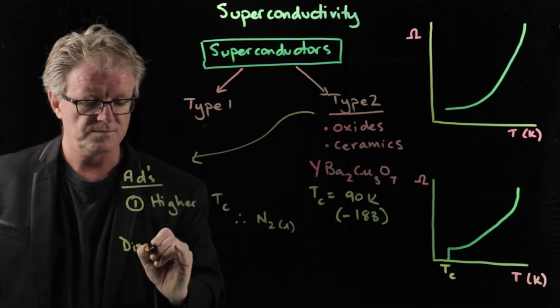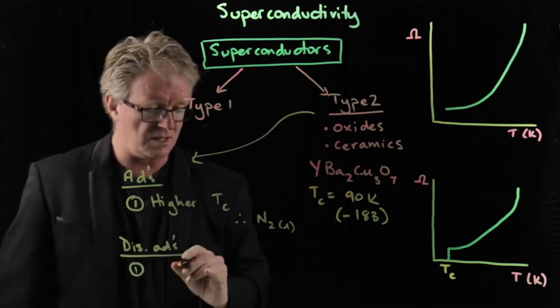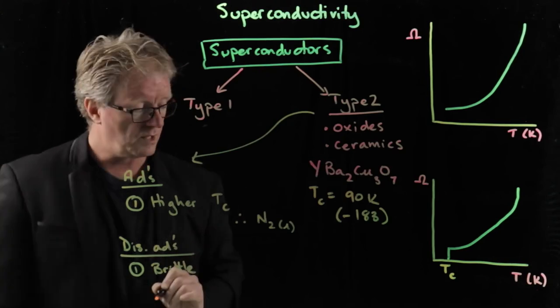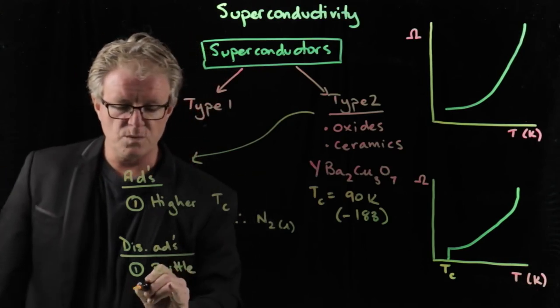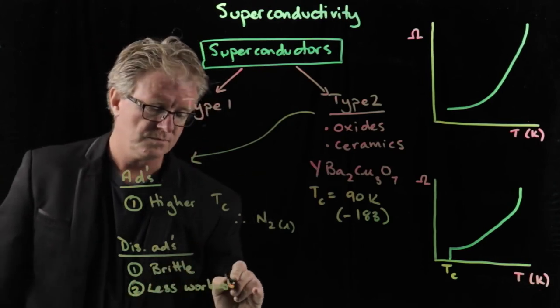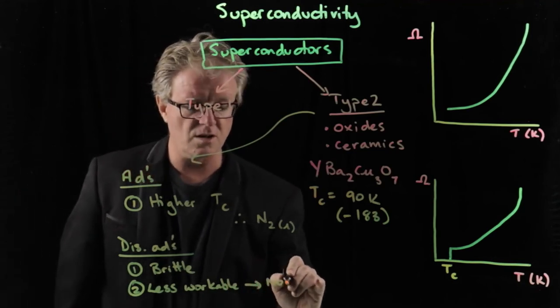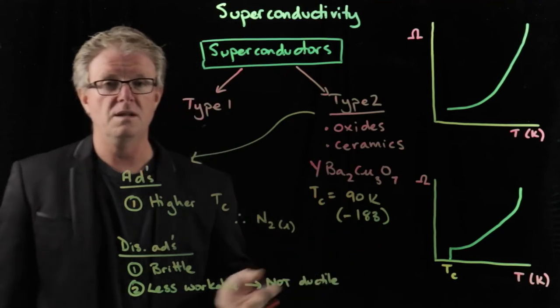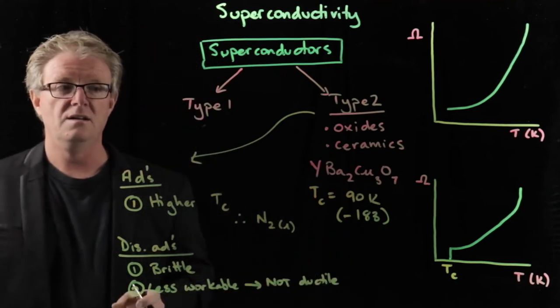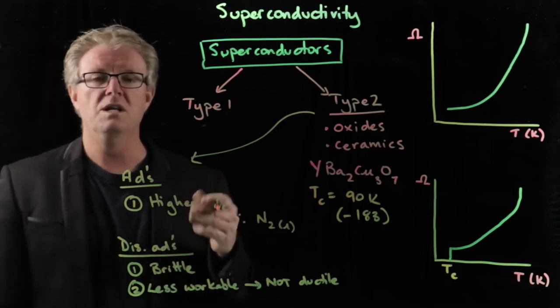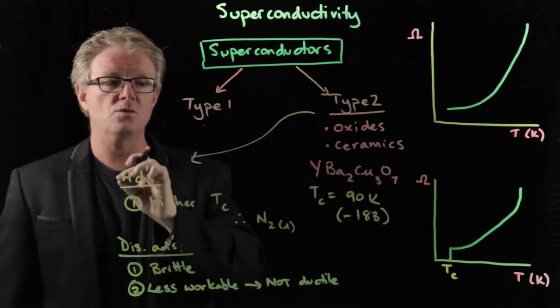One of the disadvantages is that they are brittle. They're less workable. So therefore, they're not ductile or malleable. And therefore, they shatter, and they're not going to be able to be drawn into wires. So that's a bit of a problem if we want to incorporate superconductors into wires.